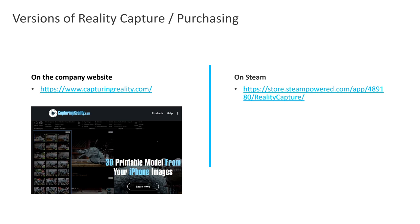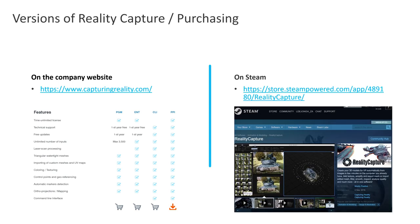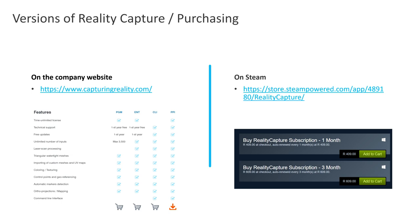A quick word about obtaining RC before we go on. Capture in Reality has released their new PPI version of RC, which is licensed on a pay-per-input model. For a cost of €20 you can buy credits, which are required to export your models after processing. Except for that limitation, the PPI version is fully featured. One alternative is to buy your RC license on Steam, which I did. As a South African, I'm using the South African Steam store, so the totals are in Rands with approximate USD equivalents displayed for reference.